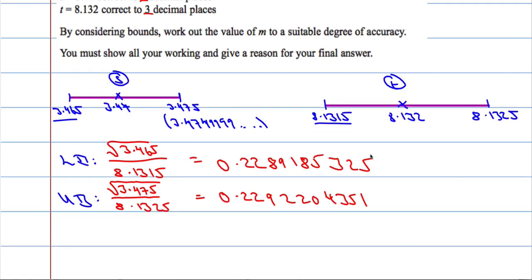So if we look at our two answers, I'm going to give an answer of 0.229. The reason why is because if I round this to 3 decimal places and I round this to 3 decimal places, I get the same answer.